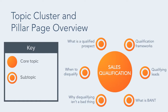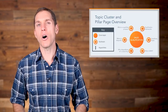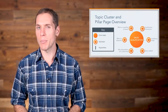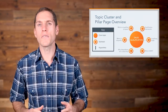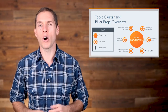A subtopic should be strong enough to stand alone in the form of a blog post or video, but when combined with other like-themed subtopics, it should be relevant to and support your core topic. In this case, 'what is a qualified prospect' and 'what is BANT' are examples of strong subtopics that support the core topic of sales qualification. What completes this content pillar — which solves for both the searcher and the search engine — is connecting everything through a series of hyperlinks. By linking all relevant subtopics to the core topic, which is your pillar page, you're funneling all of your traffic to the main resource hub on this topic.